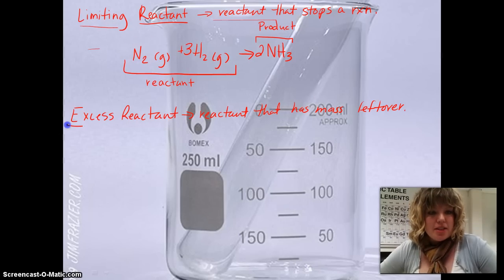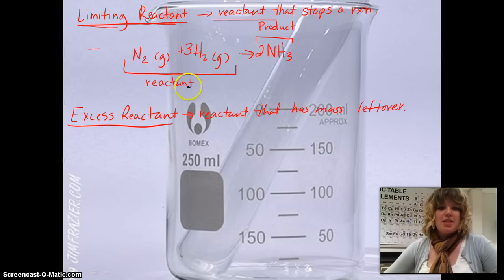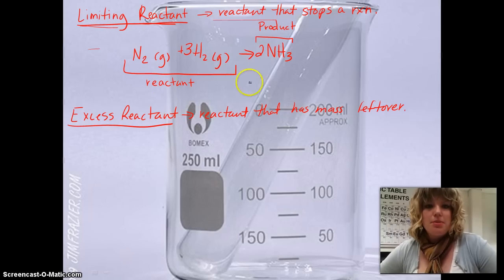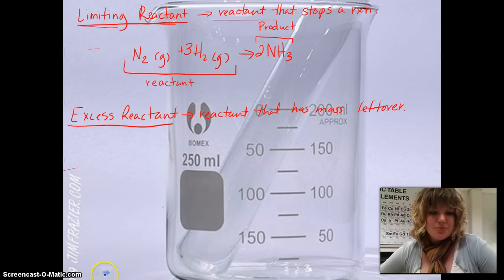Sometimes we might not have this excess reactant and the limiting reactant if it's a perfect, complete equation that all of these nitrogen atoms react completely with all of these hydrogen atoms. And we can actually calculate that to figure exactly how many grams we need for it to be a complete reaction. And we can figure out which one's going to be limiting with the amount that we have. So let's go ahead and try one of these problems out.